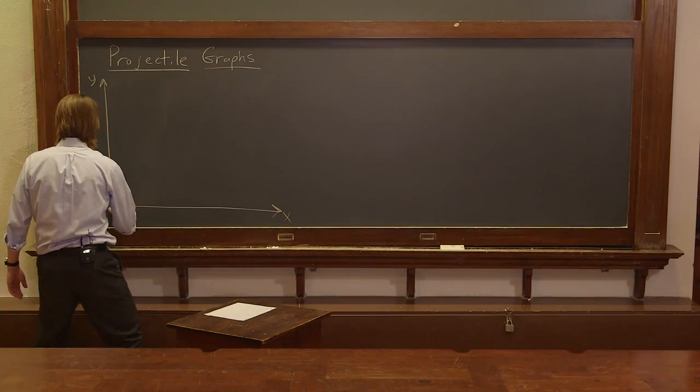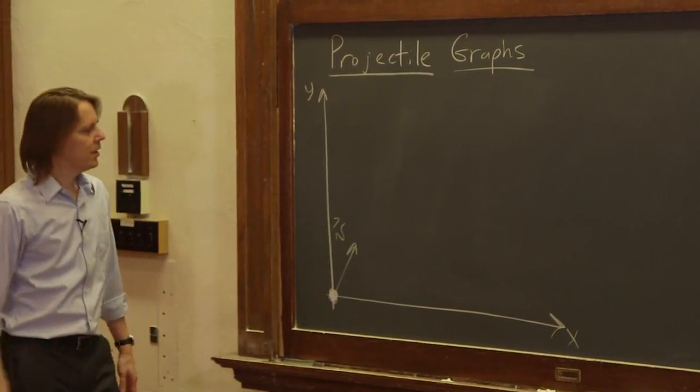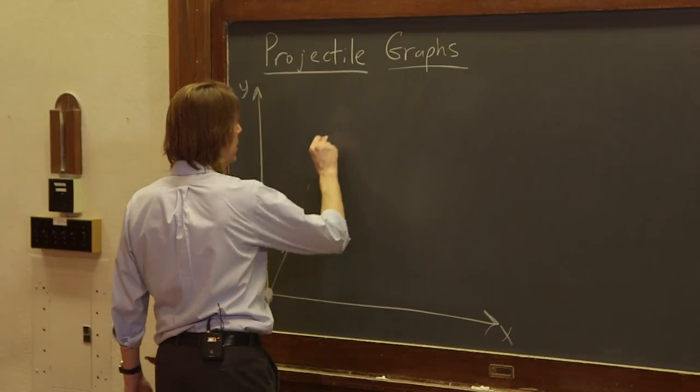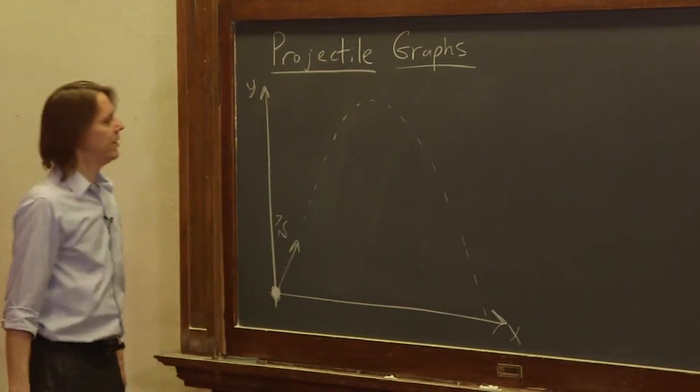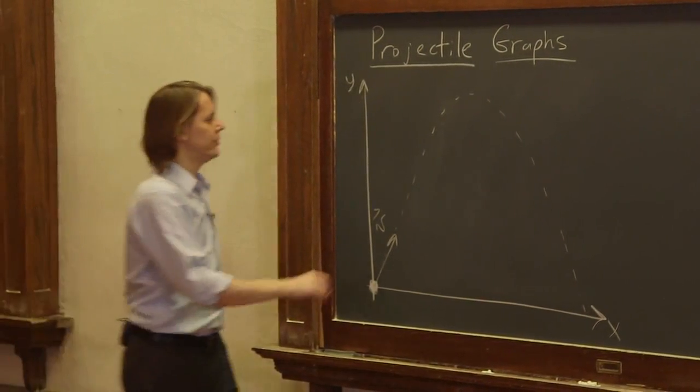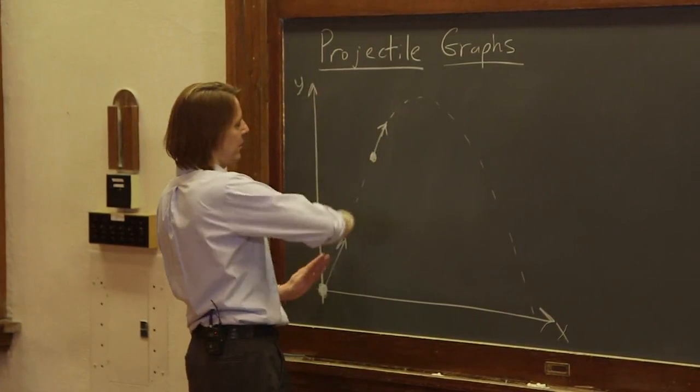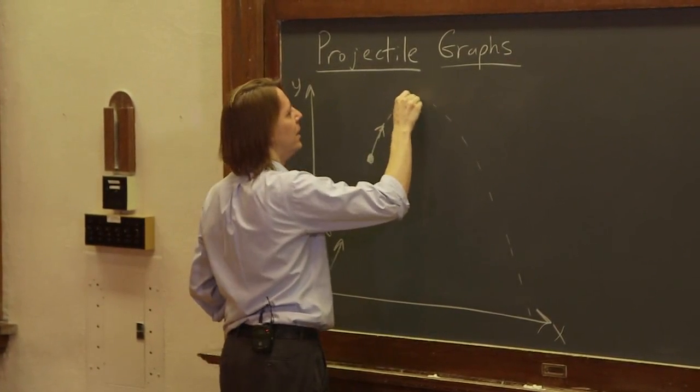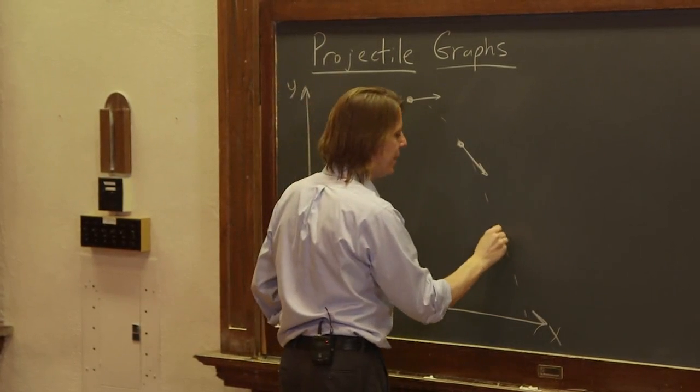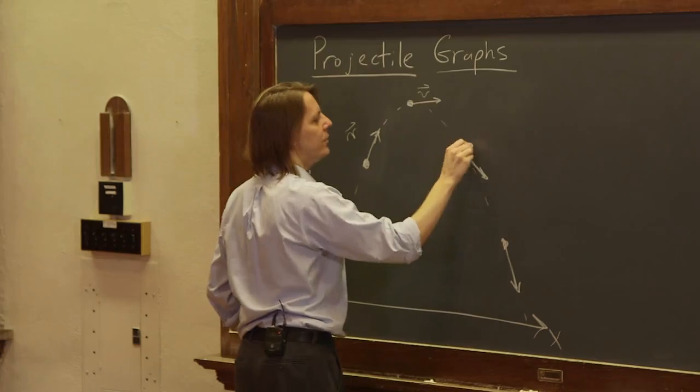And here's our projectile given an initial velocity like that. So we know what it's going to do. It's going to go in a parabolic trajectory like that. And we can think about it at all points along the trajectory. It's always moving with a velocity sort of pointing along the way. So this should be dipped down a little bit and up here the velocity is like that and down there the velocity is like that and down here the velocity is like that. So those are all velocities.